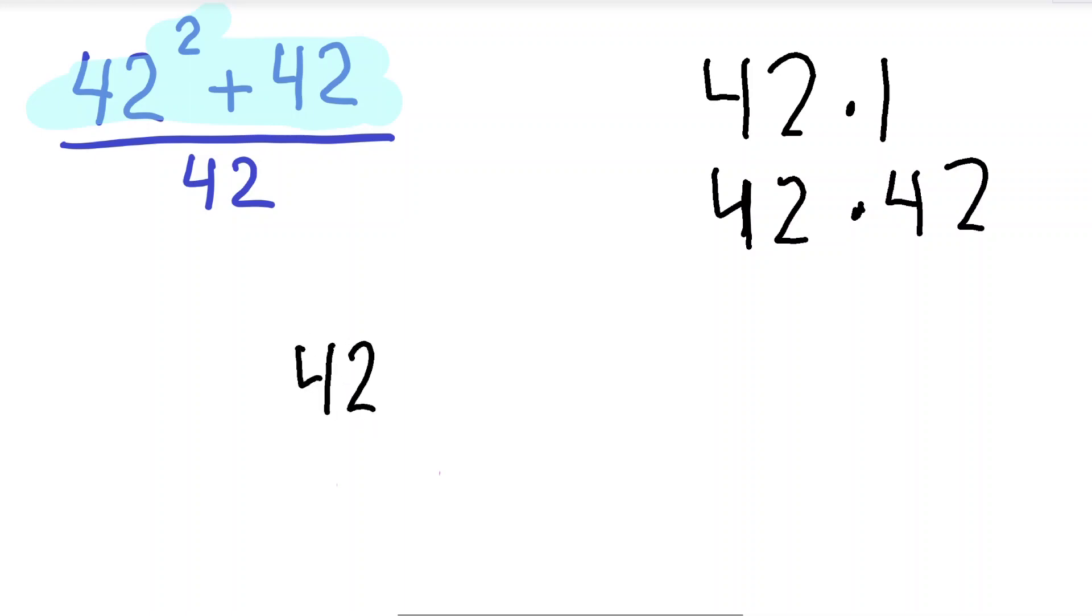Since you're going to divide the inside by 42, 42 squared divided by 42—or take this 42 out—you're going to be left with 42. And 42 divided by 42, you're left with 1.